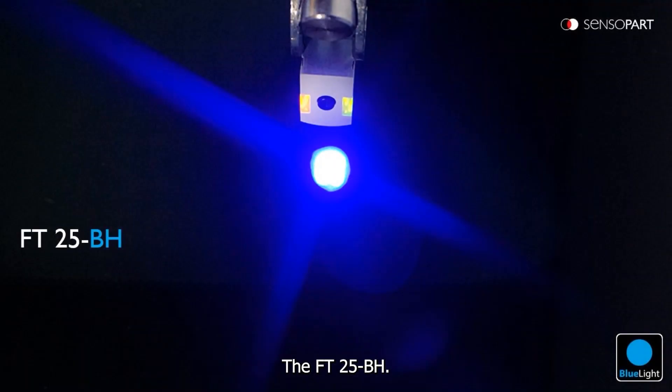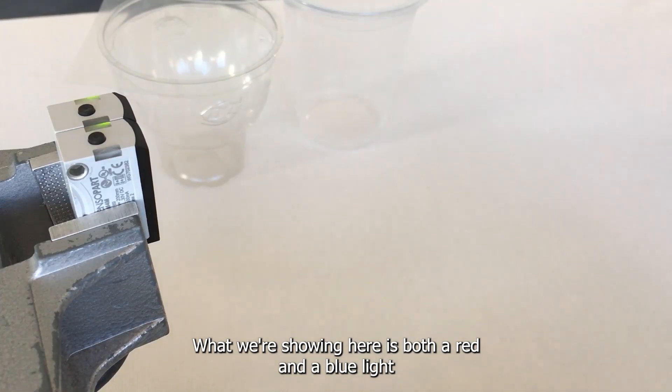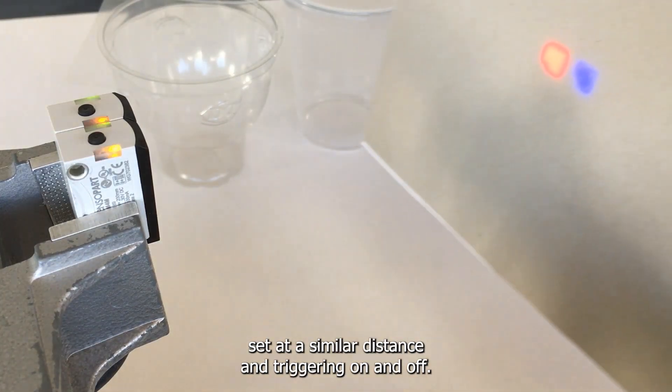The FT25BH. What we're showing here is both a red and a blue light set at a similar teach distance and triggering on and off.